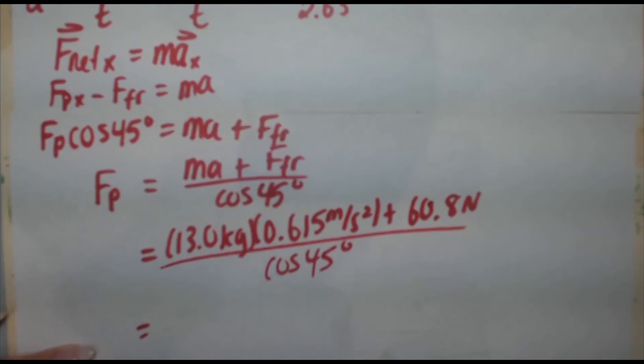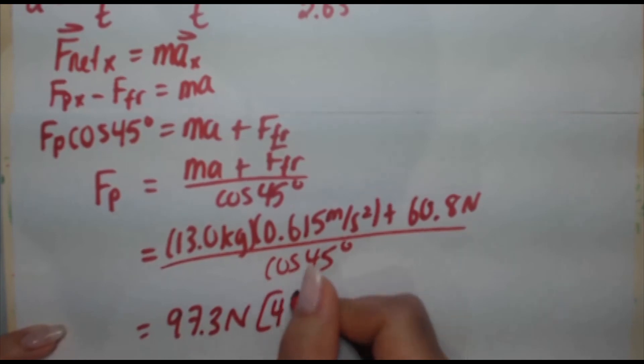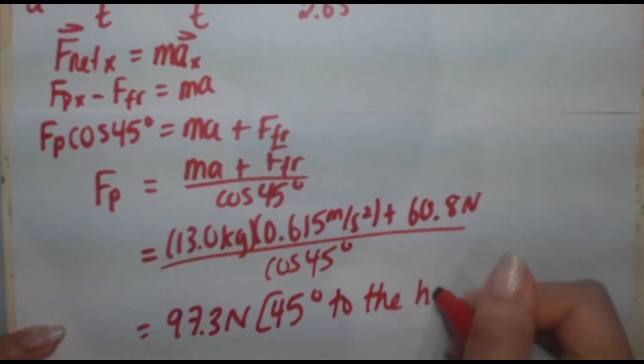And we're going to divide all this by the cosine of 45 degrees. When you enter that expression in your calculator, you are going to get 97.3 Newtons.